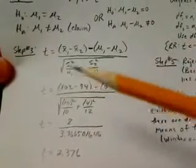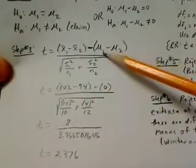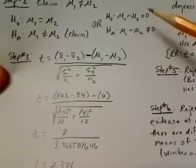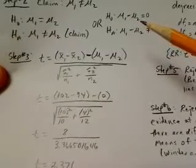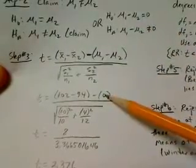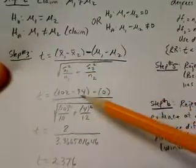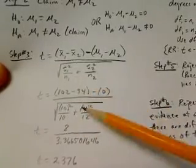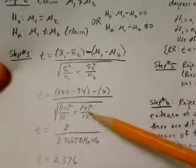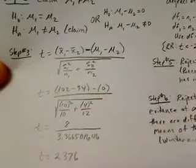So we fill in all of the numbers that we have. X bar 1 is 102. X bar 2 is 94. Mu1 minus mu2, we always obtain that from the null hypothesis. It's the numerical value obtained from the null hypothesis. That's why we want to subtract mu1 minus mu2, and we get 0. And then we take S1 squared, which is 10, and then square it, divide by 10, which was n1, plus 4, square it, divide by 12, add those two numbers, add those values together, and then take the square root.